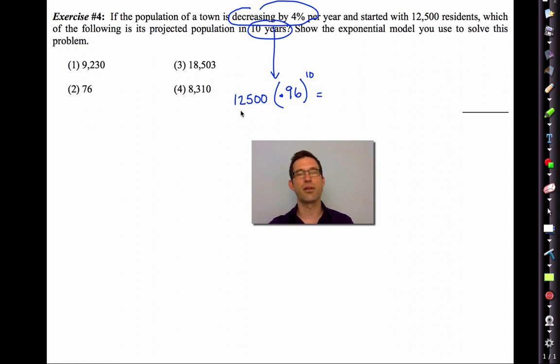So we just use our calculator, 12,500 times 0.96 to the 10th, and what we find if we look at the notes that has the answer on here? It's a messy number. It's like 8,310.407, et cetera, but that's closest to choice four. Let's do some more sophisticated modeling.